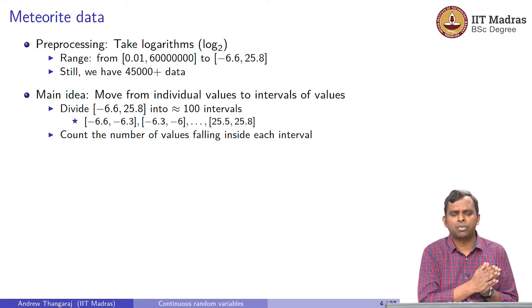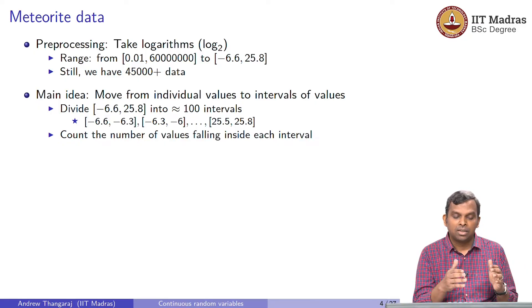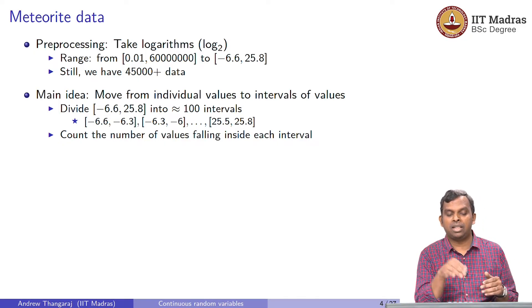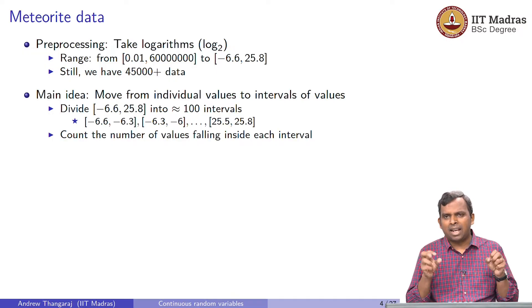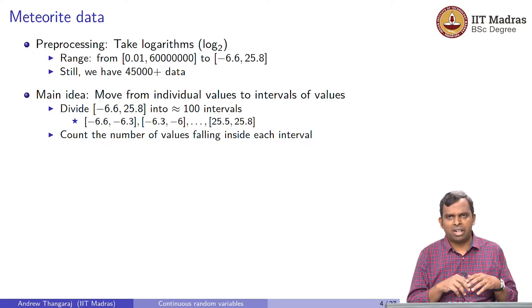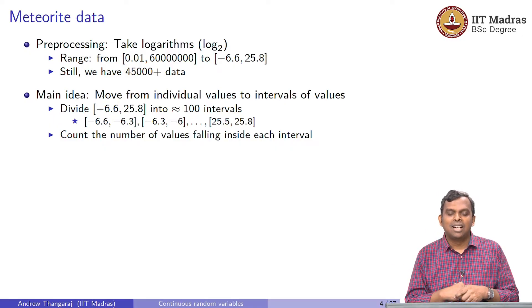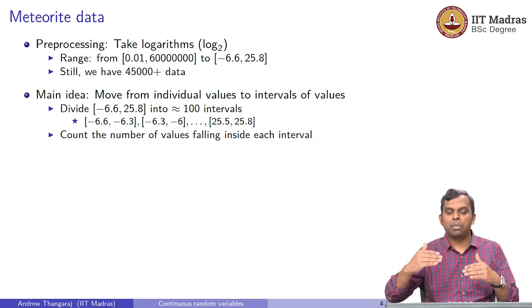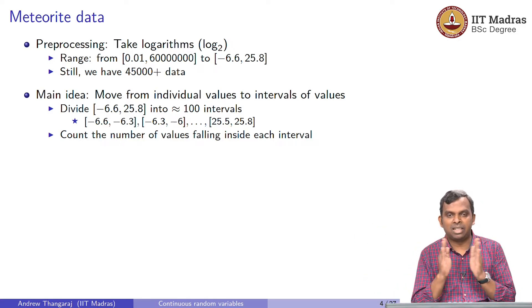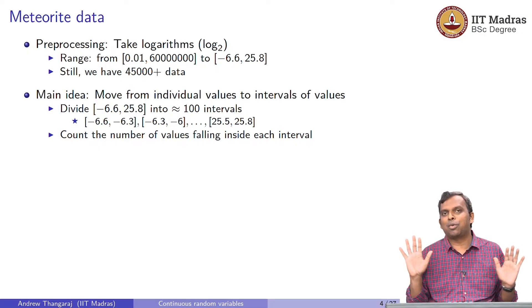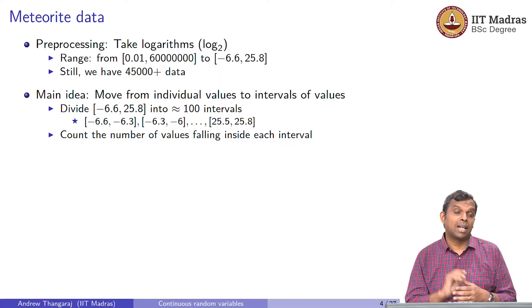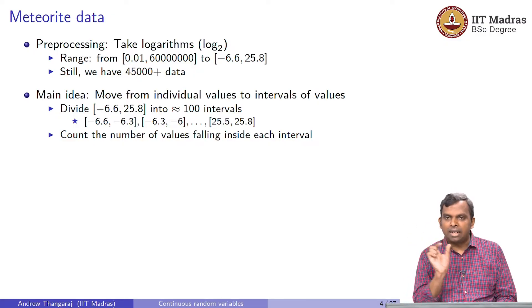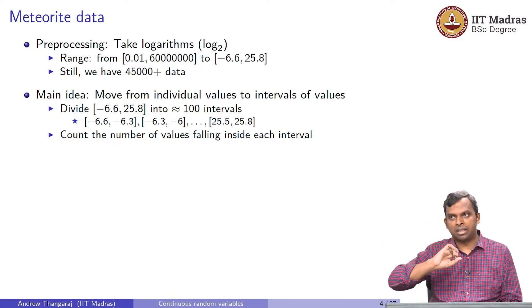For instance, with the range minus 6.6 to 25.8, maybe I want to divide it into 100 intervals — roughly minus 6.6 to minus 6.3, then minus 6.3 to minus 6.0, and so on up to 25.5 to 25.8. This 100 is something in my hand — I can change it to 1000, 500, or 25. In the continuous world in theory, you want to make the number of intervals as large as possible and the interval widths as small as possible. It is always about intervals as opposed to individual values. That move from individual values to intervals is very, very crucial when you go from discrete to the continuous world.